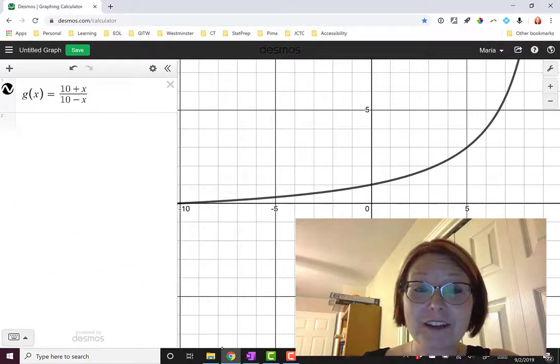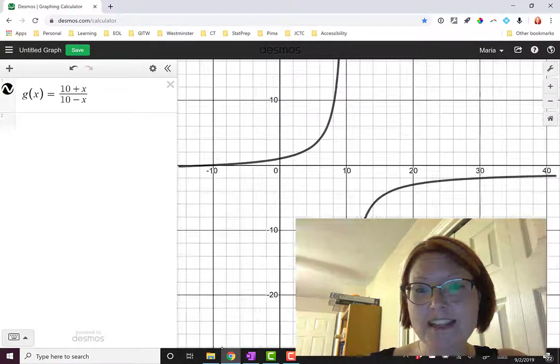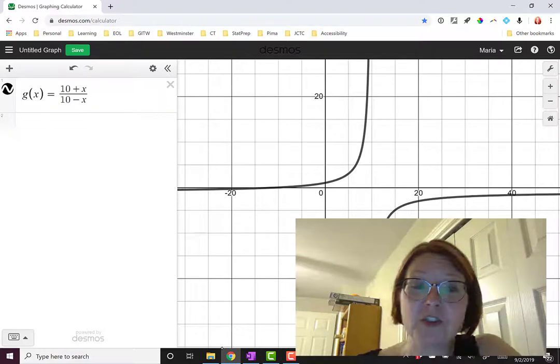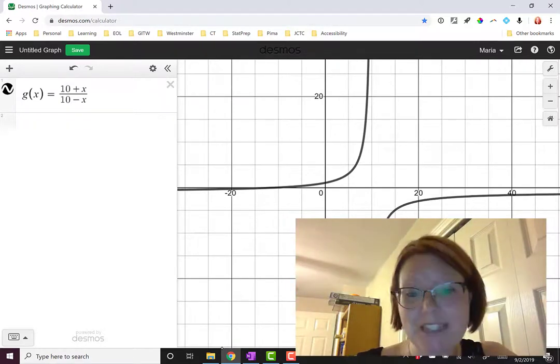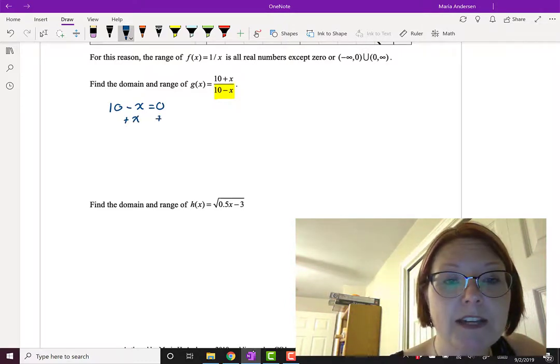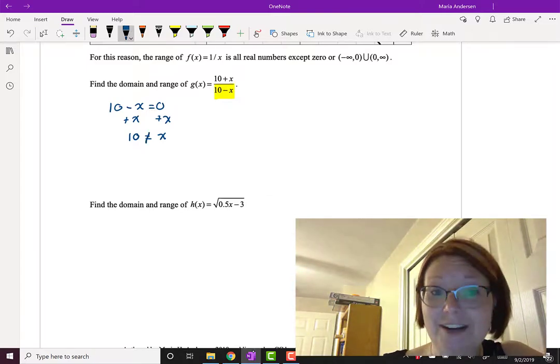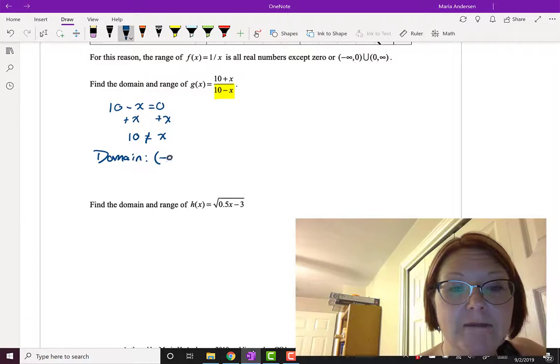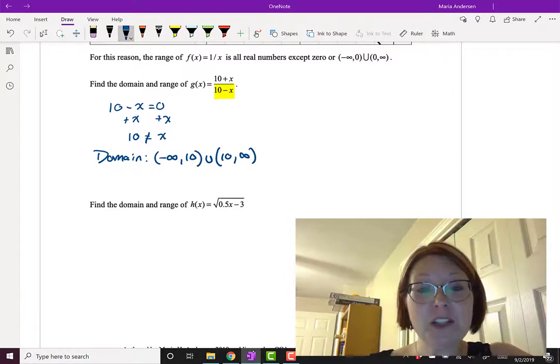Alright, we're back. I've got the graph of (10 + x)/(10 - x). I'm going to zoom out a bit so that I see all the parts of it. Hopefully you figured out that the domain here can include every x value except for 10, because we have a denominator of 10 - x. So we want to look at where 10 - x = 0 and then disallow those values. If we add x to both sides, we'll be left with 10 = x. That means our domain is (-∞, 10) ∪ (10, ∞).